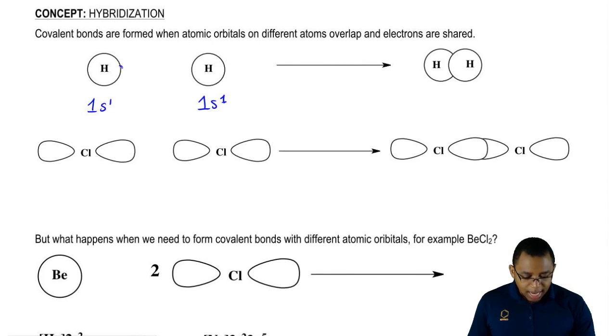They each have one electron in their first shell. They can overlap together to form a bond because what's forming the bond are their S orbitals. Each S orbital needs one more electron to get to 1S2 so that each hydrogen can be just like helium.